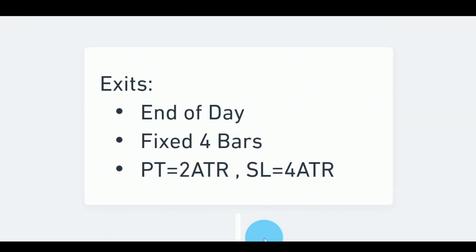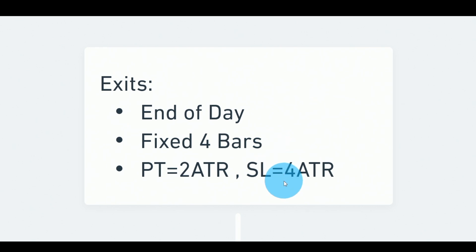We have three defined exits in this workflow. The first is end-of-day: we enter on the session open and exit on the session close. The second is four-bar exit: we enter on the session open and exit after four daily bars. The third uses a profit target of 2× ATR (20-bar average true range) and a stop loss of 4× ATR. These are fixed at 2 and 4 not to produce the best profit, but so the two levels don't overlap on the same day.